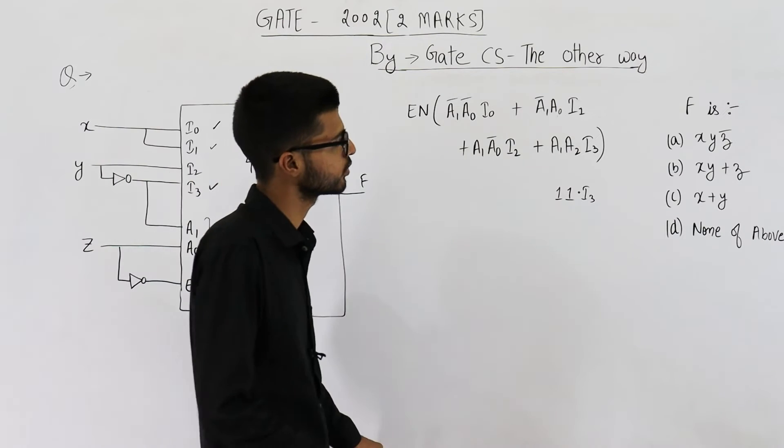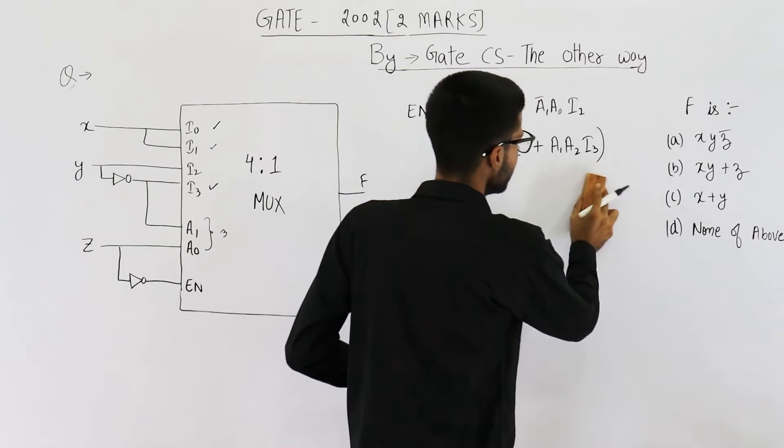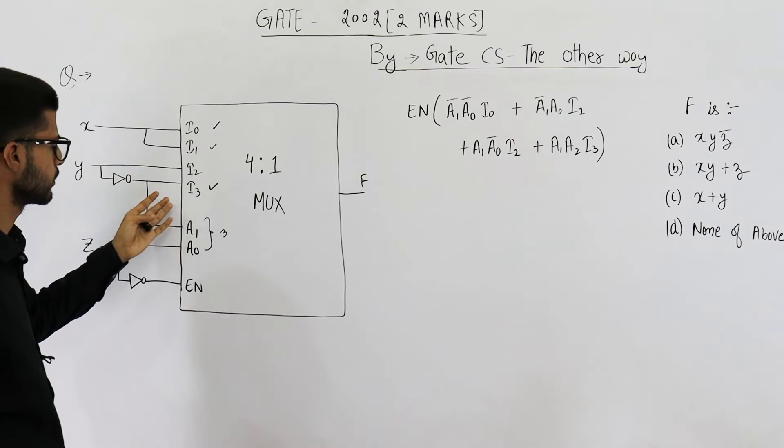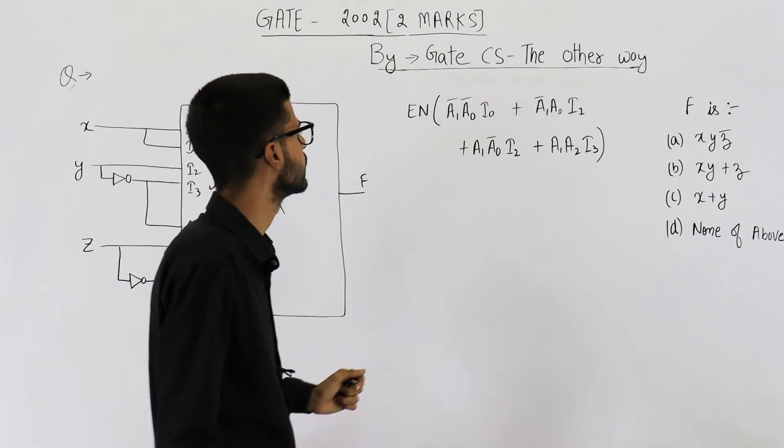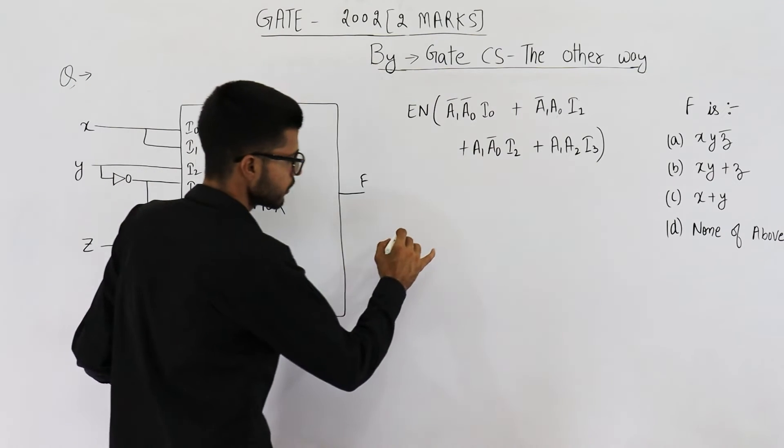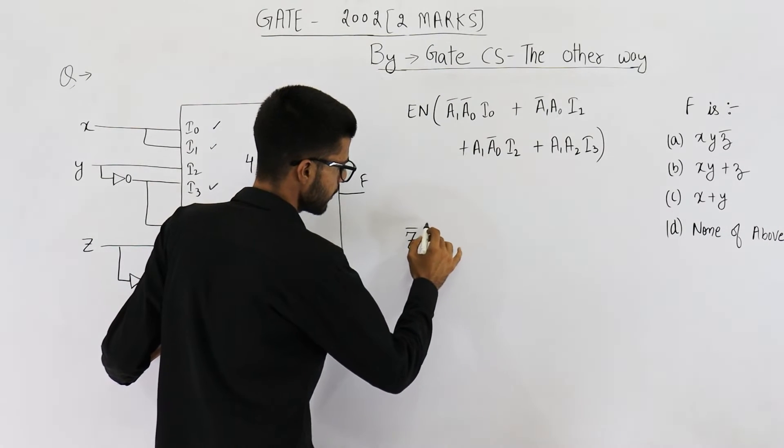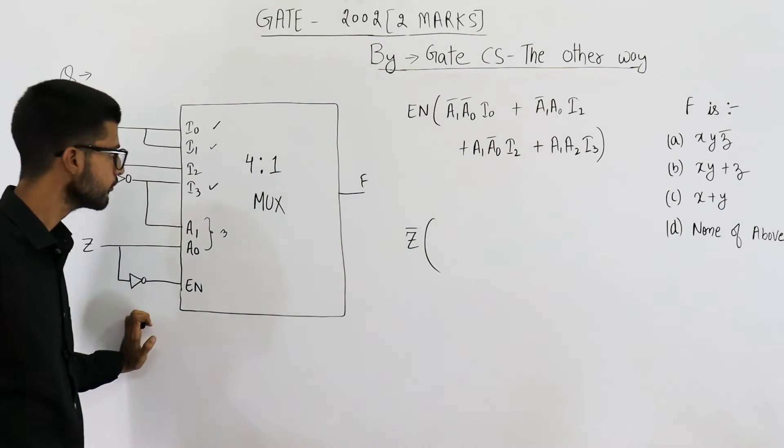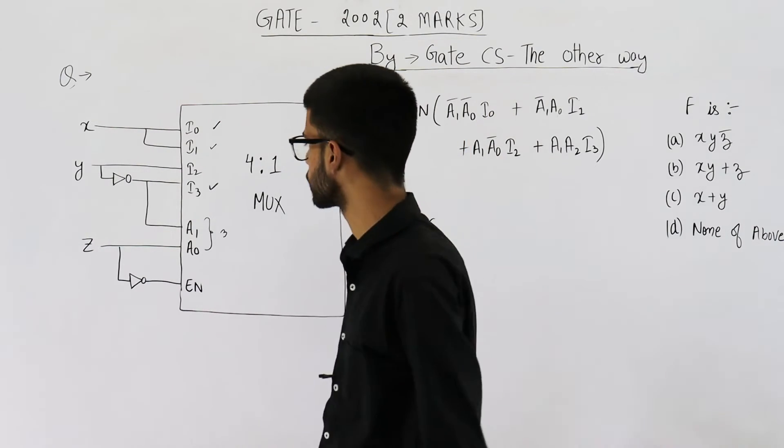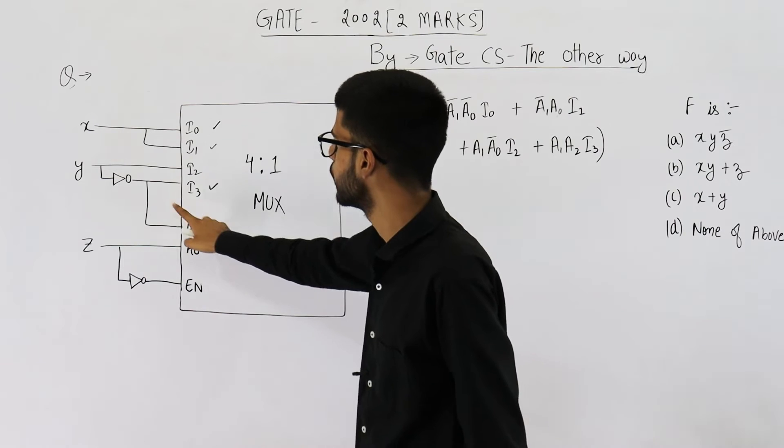Now, this question is almost solved. We just need to substitute these values of I0, I1, I2, I3 and so on. See, enable is Z bar. So, the output will be Z bar and A1 bar, A0 bar, I0. Let us substitute. A1 is Y bar.